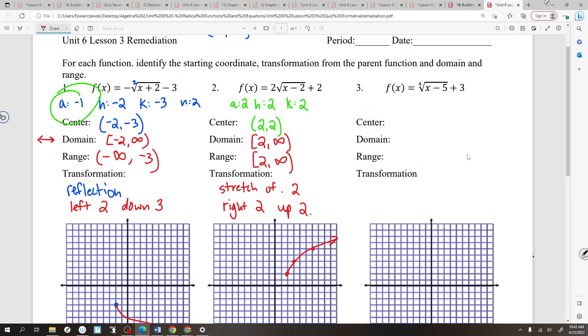Next problem. Center here. I'm no longer going to be identifying A, H, K, and N, but N is 4. H would be 5. K would be 3. 5, 3 would be here. And essentially, it'll look something like that. Domain would be 5 to infinity. Range would be 3 to infinity. Transformation would be right 5, up 3. And we're going to pause there.